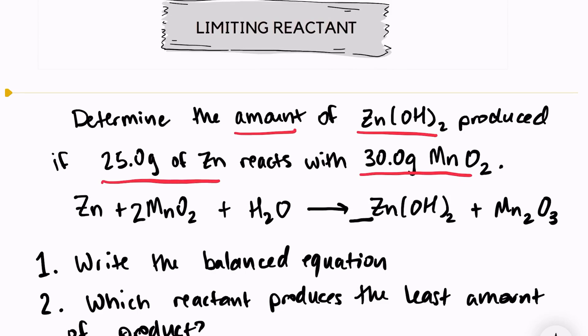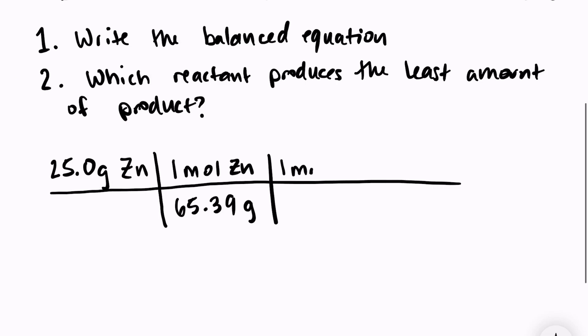So here I have a coefficient of one. I want to know how much zinc hydroxide is produced. And in front of zinc I also have a coefficient of one. So one mole of zinc hydroxide over one mole of zinc.